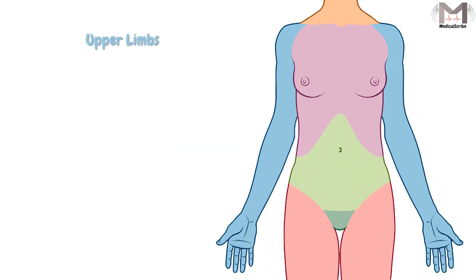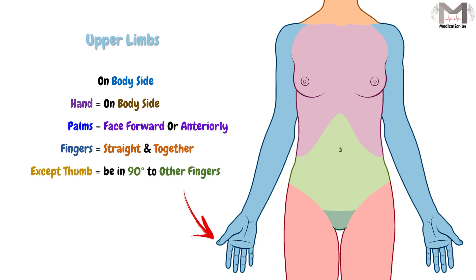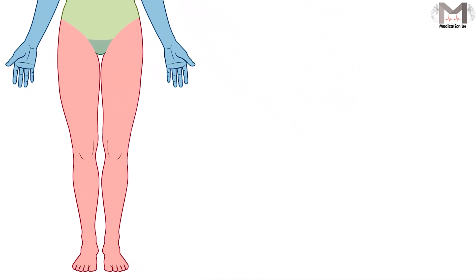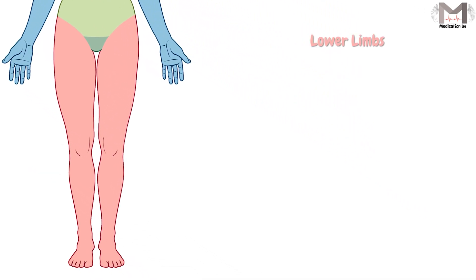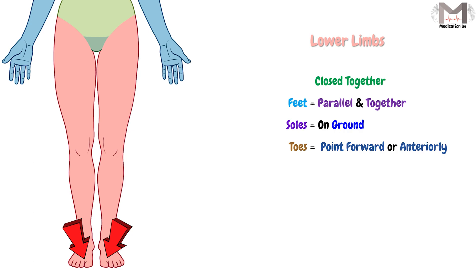As for the upper limbs, they are on the body side, the hands also on the body side, and the palms face forward or anteriorly. The fingers are straight and together, except the thumb which is at 90 degrees to the other fingers. As for the lower limbs, they are close together, and the feet must be parallel and together. The soles of the feet are on the ground and the toes point forward or anteriorly.